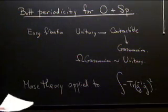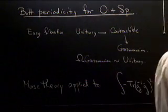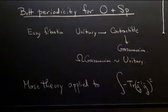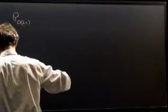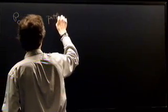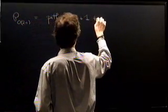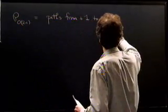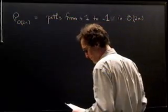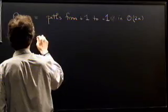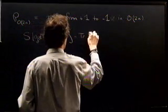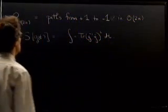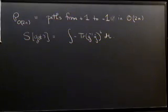We found that the minimal action loops were given by Grassmannians. Now we're going to apply the same strategy to loops on the orthogonal group. We look at P sub O(2N), which is the space of all paths from +1 to -1 in O(2N). We have the action for path G(t): minus the trace of G inverse G-dot squared, DT.